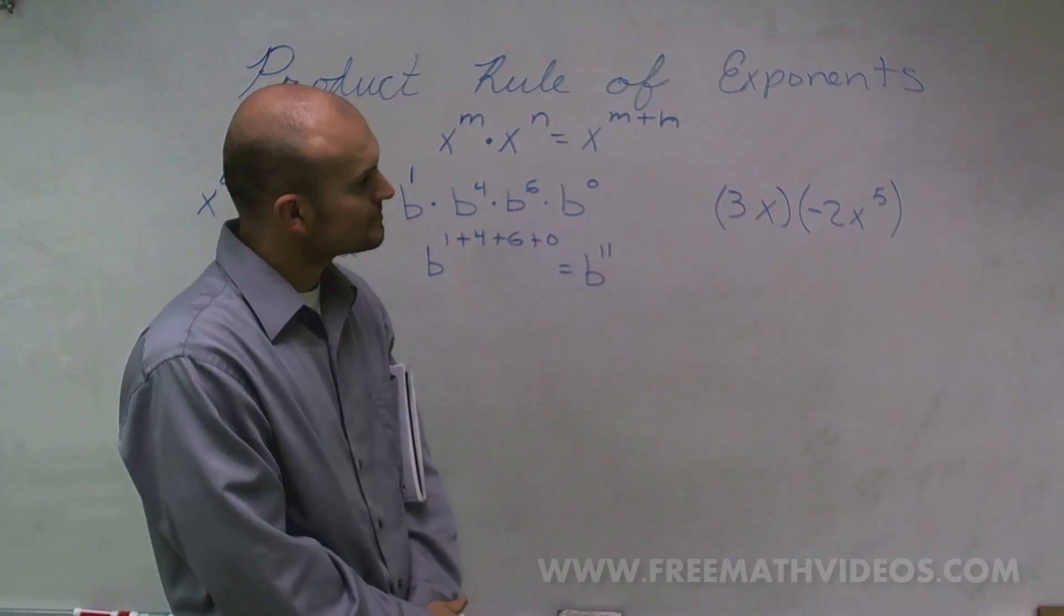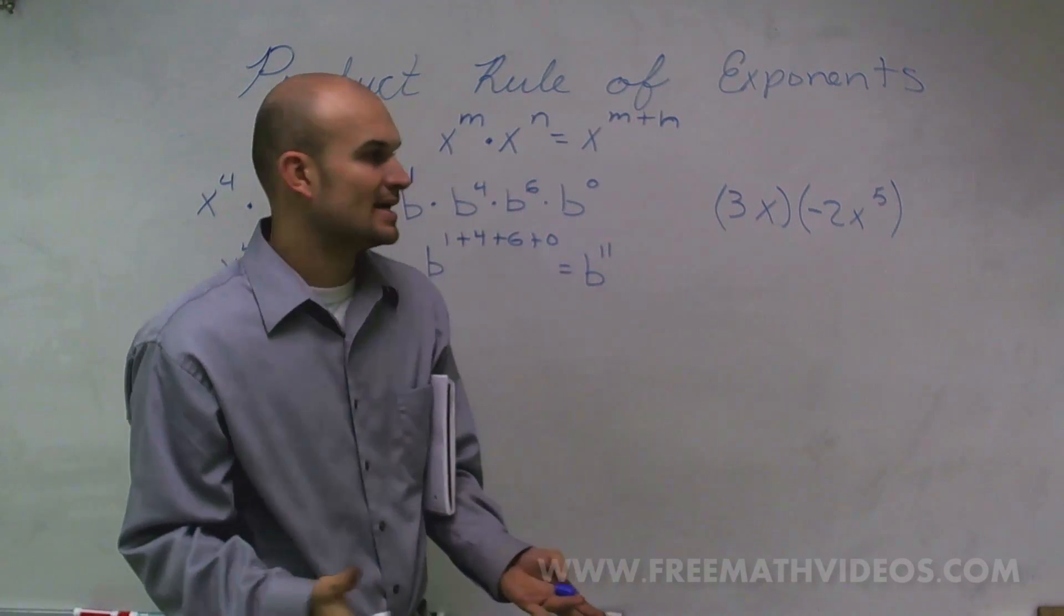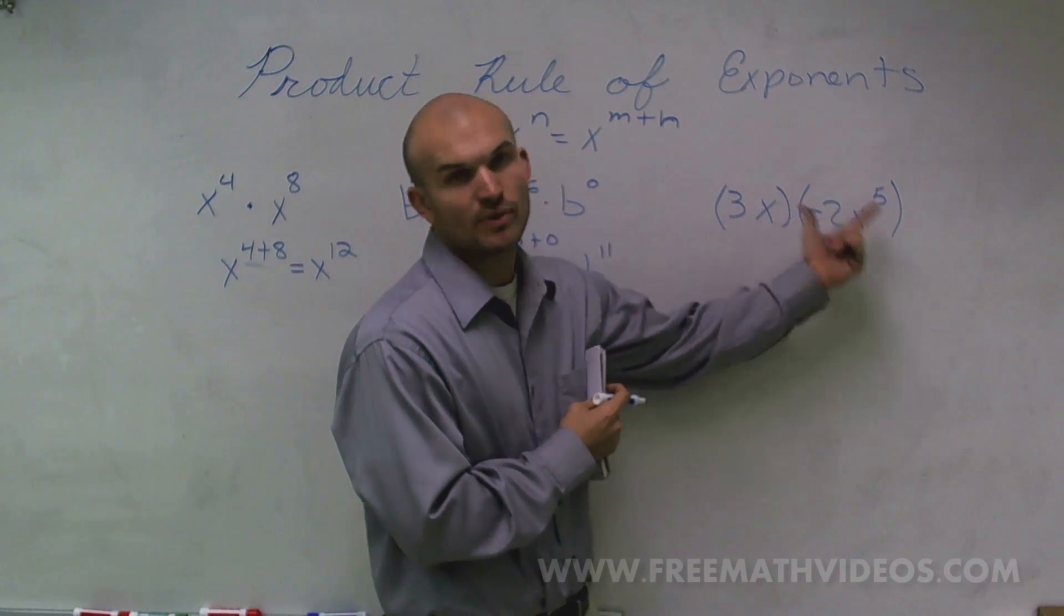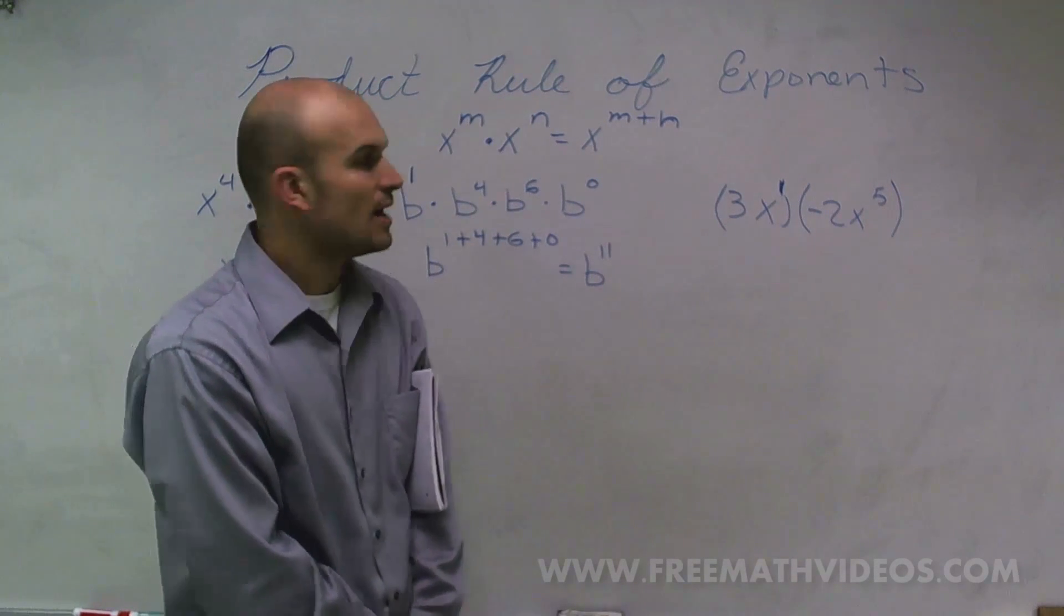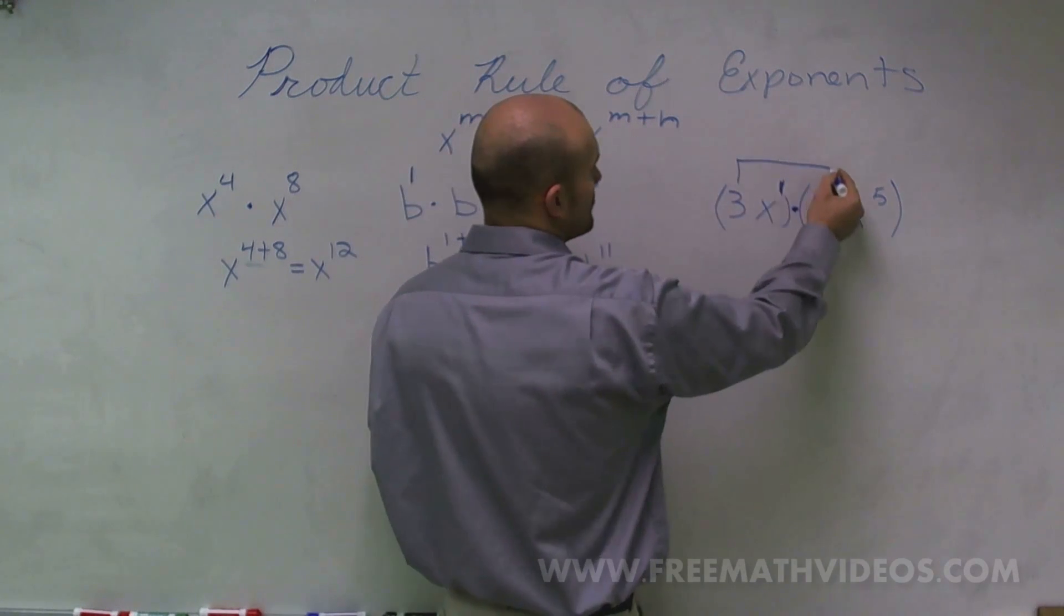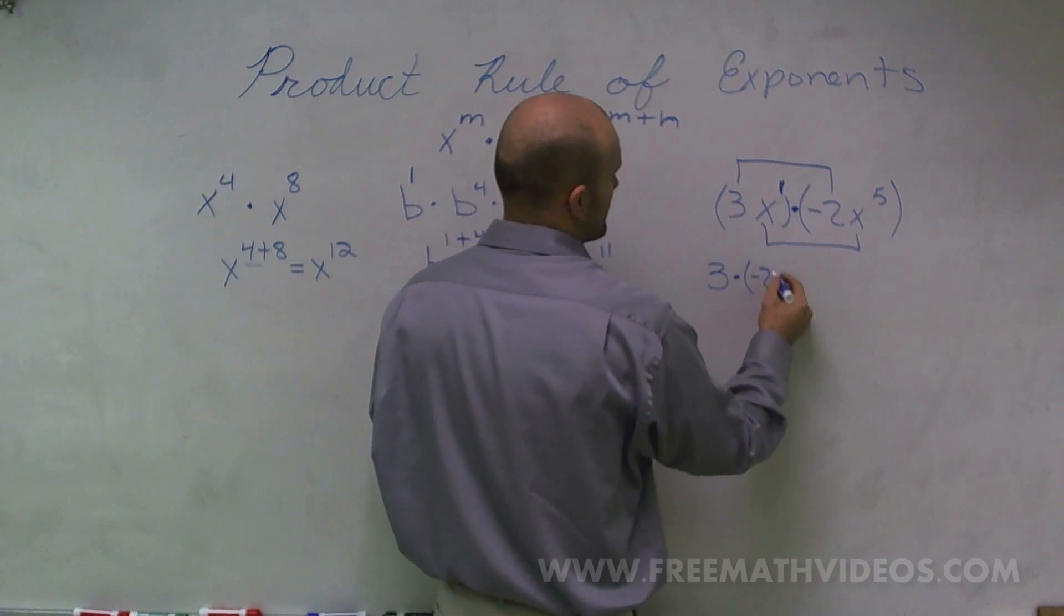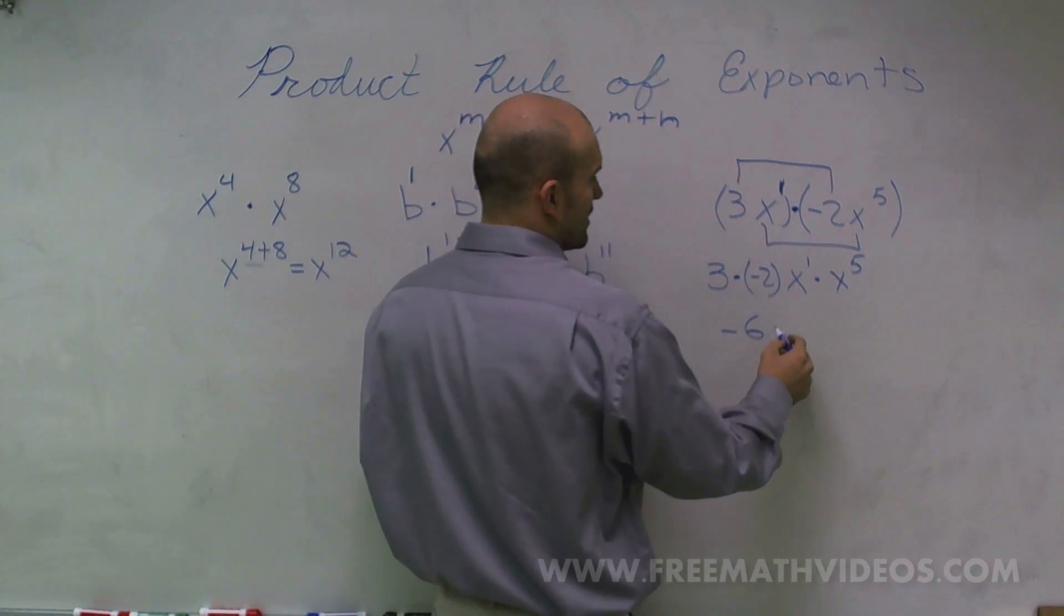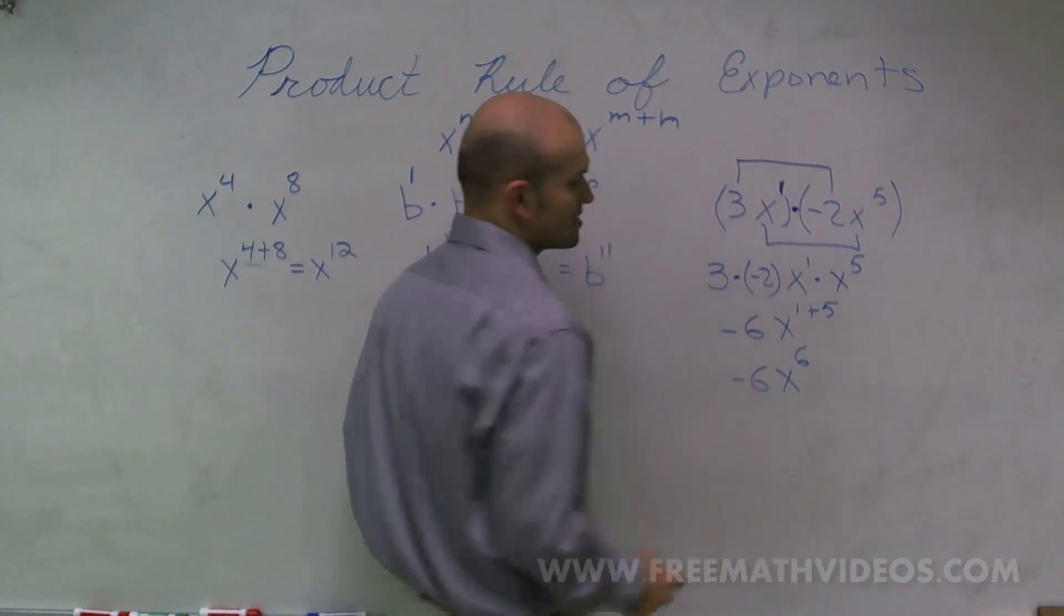And finally, the last thing we need to look at is now we're going to have some coefficients in front of our variables. And that's really not going to change our product rule of exponents. Still, even though we have these coefficients, we can only touch what we have with our exponents. I'm going to want to put a 1 up there. So now since we're multiplying here, my operation between my parentheses is multiplication, I need to make sure I multiply my coefficients and add my exponents. So I'll have 3 times negative 2, and then I'll have x to the first times x to the fifth. Well, 3 times negative 2 is negative 6, and then here I have x to the 1 plus 5, which equals negative 6x to the 6th power.